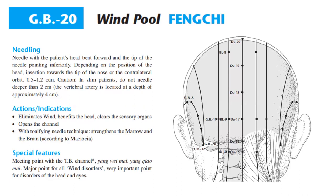Needling: needle with the patient's head bent forward and the tip of the needle pointing inferiorly. Depending on the position of the head, insertion is towards the tip of the nose or the contralateral orbit. 0.5 to 1.2 cun. Caution: in a slim patient, do not needle deeper than 2 cm.